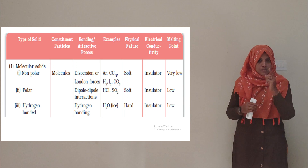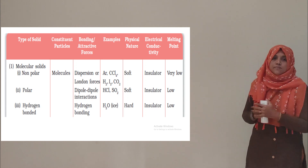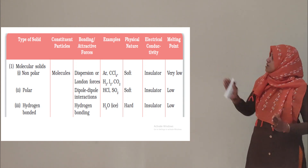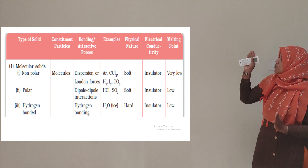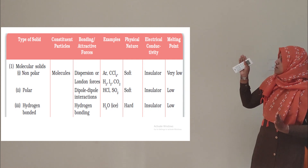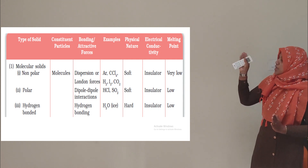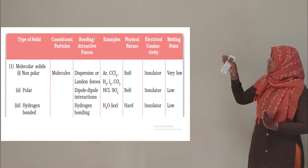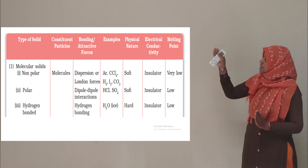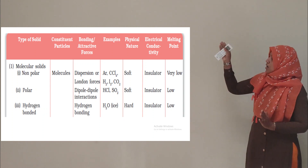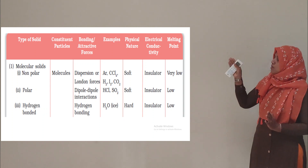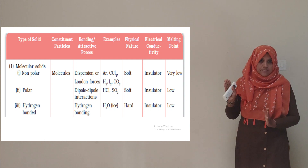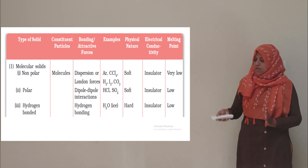The first type of crystalline solid is molecular solid. Molecular solid is again classified into three types: polar, non-polar, and hydrogen bonded.